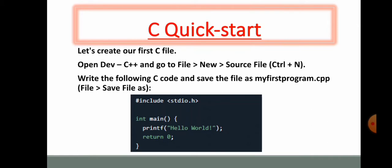Write the following C code and save the file as MyFirstProgram.cpp. File, Save As. When the display appears, you will write it down, save as, and give that file the name MyFirstProgram.cpp.